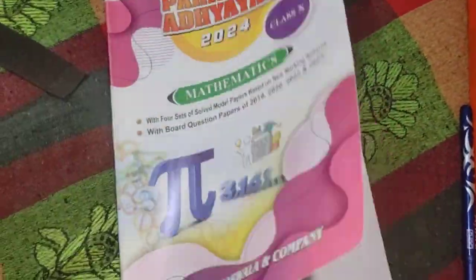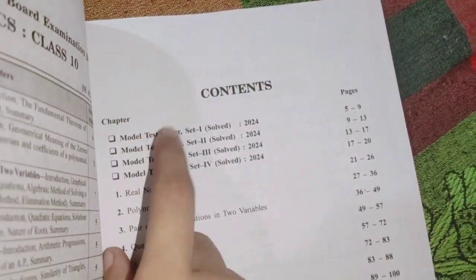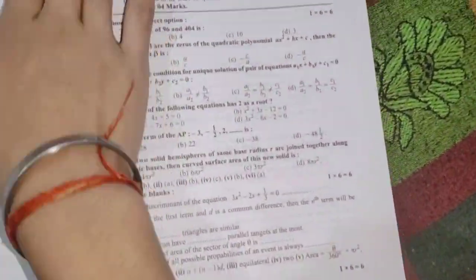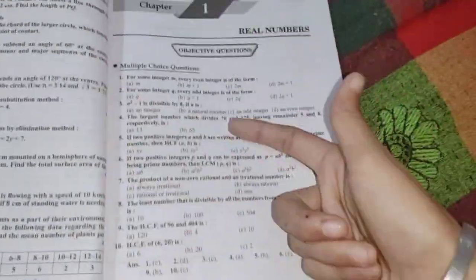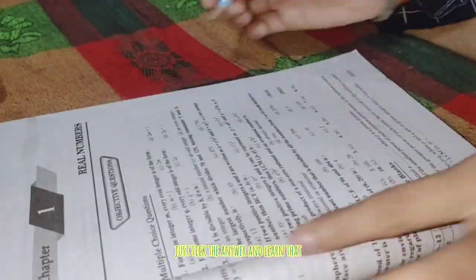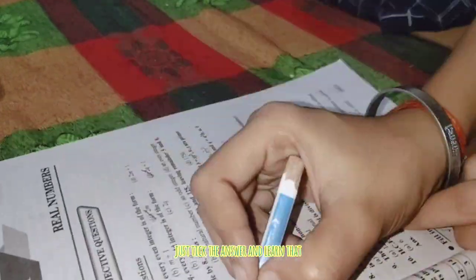I did math MCQs. I was learning from a model paper. I had to work on it, but it was from chapter 1 and chapter 2. So I clicked on it. That means chapter 1 and chapter 2.